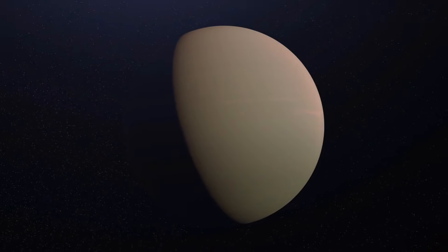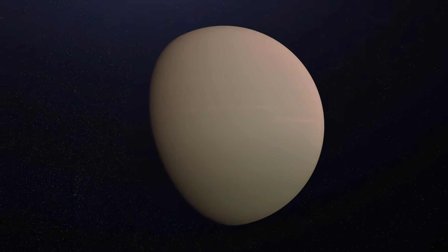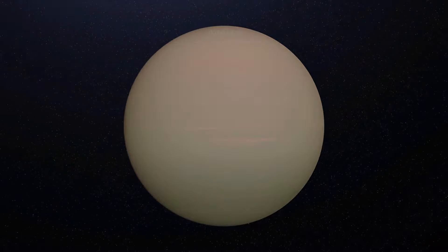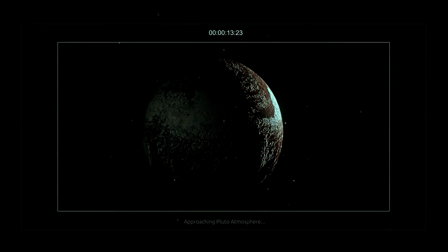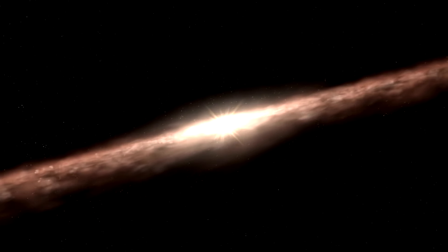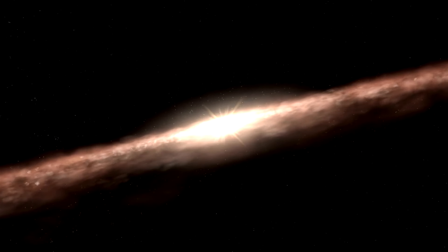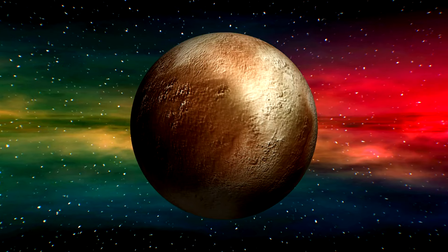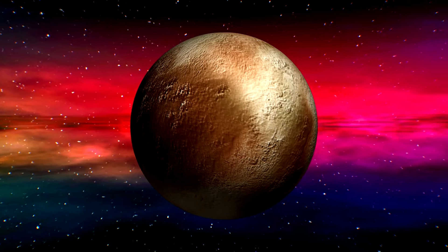In conclusion, Pluto's thin yet dynamic atmosphere is a testament to the complexity of even the most distant celestial bodies in our solar system. Its unique composition and behavior not only contribute to Pluto's otherworldly beauty but also challenge our understanding of atmospheric science in extreme conditions. This delicate veil of gases, expanding and contracting with Pluto's journey around the Sun, serves as a reminder of the intricate and fascinating processes that govern our universe, continuing to inspire and mystify both scientists and stargazers alike.